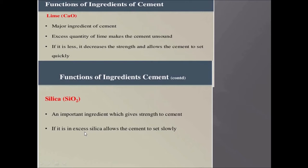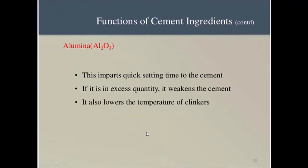If silica is present in excess, it allows the cement to set slowly. Alumina imparts quick setting time to the cement — the cement sets quickly because of alumina. And if alumina is present in excess quantity, it weakens the cement and also lowers the temperature of clinker.